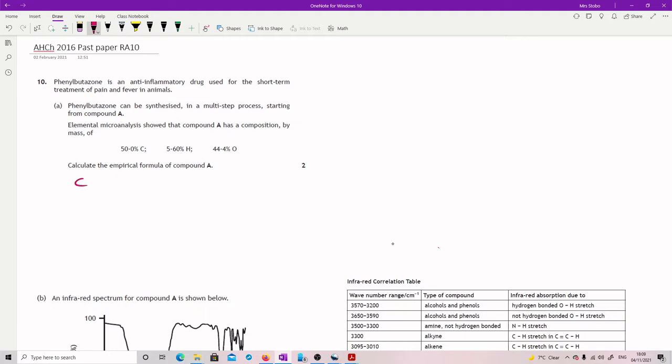Empirical formula is not that bad. So we've got carbon, hydrogen and oxygen. You've got 50% of this, you've got 5.6% of that and 44.4. What you then need to do is take into account the fact that carbon, hydrogen and oxygen weigh different things. So we're just going to divide each of these by their relative atomic mass.